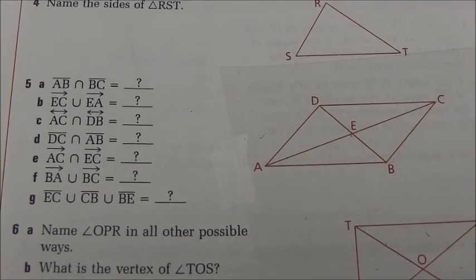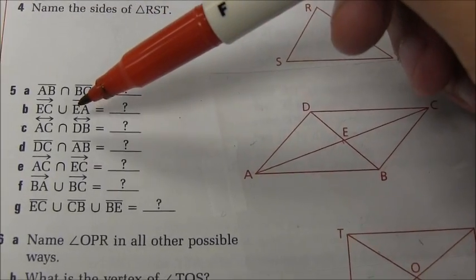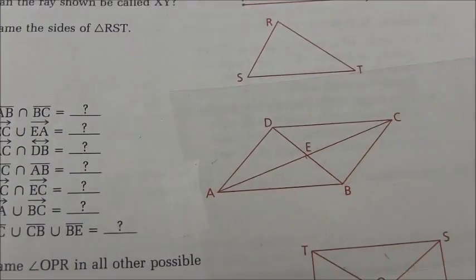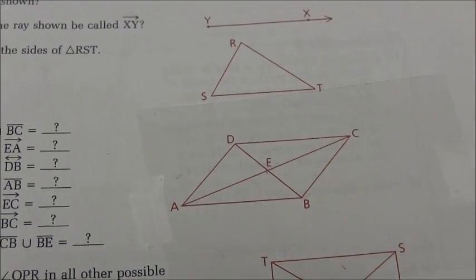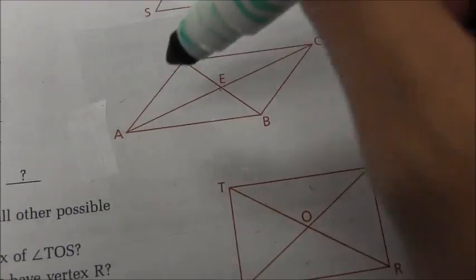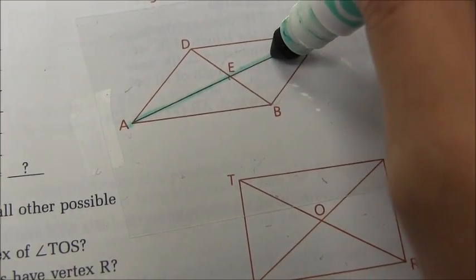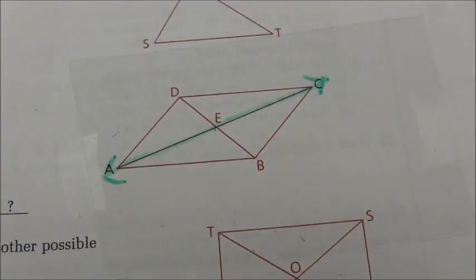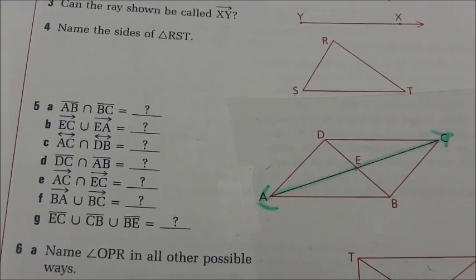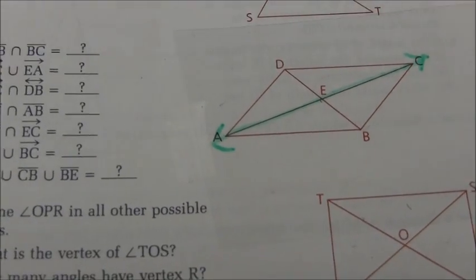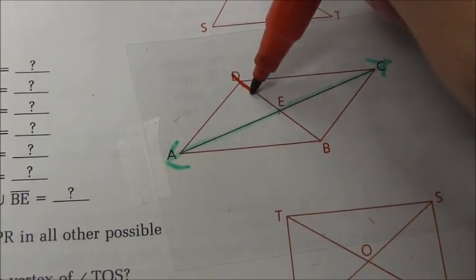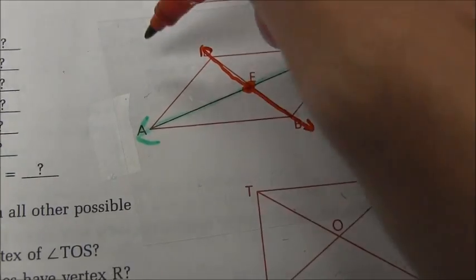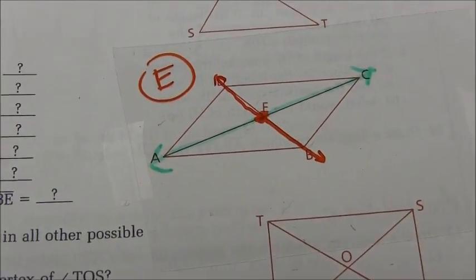Moving on to part C, it is the intersection between line AC and line DB. I'm going to trace those two lines. Remember, the intersection is wherever they overlap. I'll trace line AC and put the arrows at the ends to show this can continue on infinitely. Now I'll do line DB. We're looking for where those two things intersect each other. You can see here we're only double coloring in this one spot. The correct answer should be that the intersection is point E.